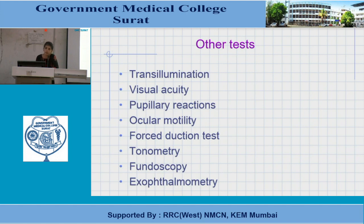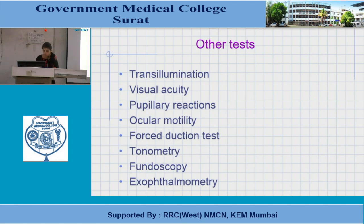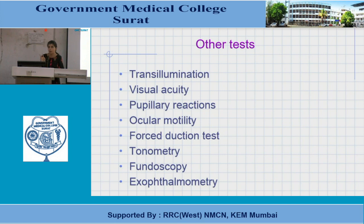Fundoscopy reveals papilledema, retinal hemorrhages, or choroidal folds when the swelling is located behind the eyeball. Exophthalmometry measures the degree of protrusion — the distance from the lateral orbital margin to the corneal apex. If it is more than 21 mm, or there is a difference of more than 2 mm between the two eyes, it is significant. Hertel's exophthalmometer allows bilateral simultaneous measurement.